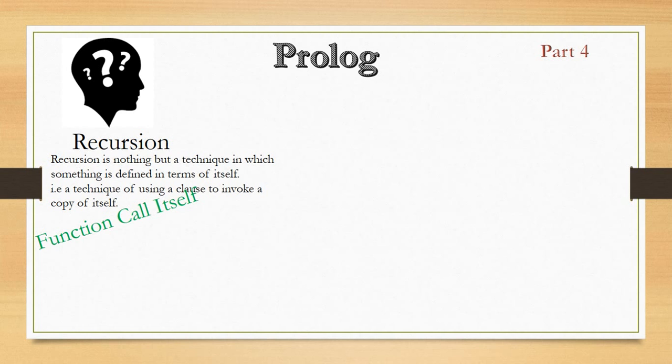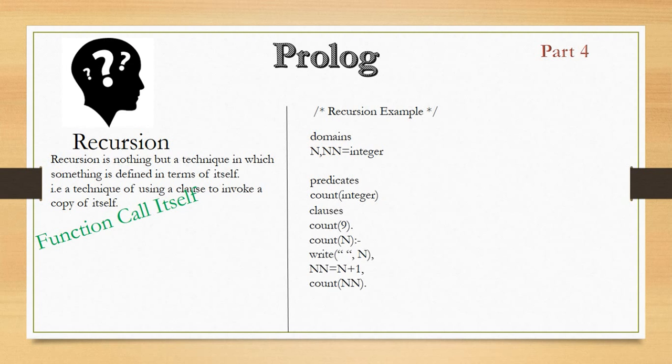So let's see this recursion in the form of example. Here I have written an int domain where I have passed two variables with the name n and nn, two variables of integer data type. And in predicate I have written a function, a relationship with a name called count, and in that an integer I have passed.